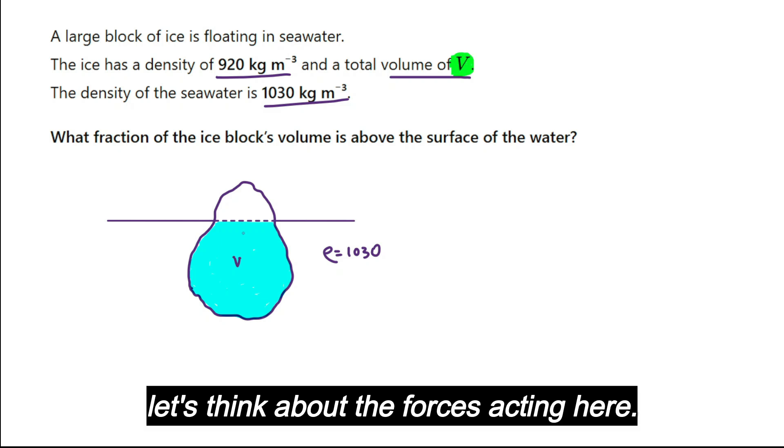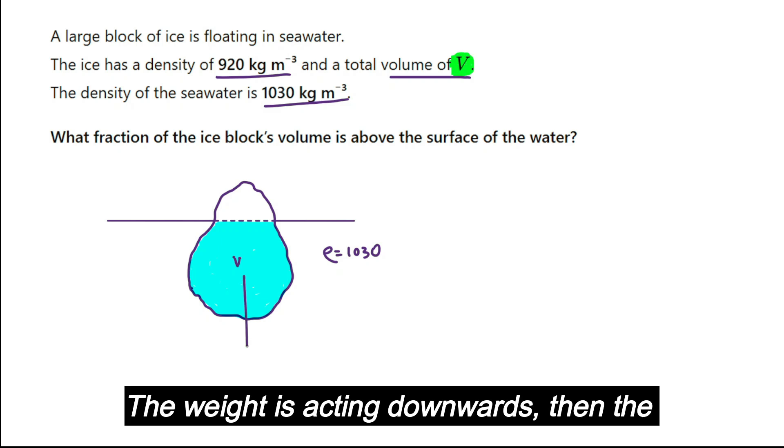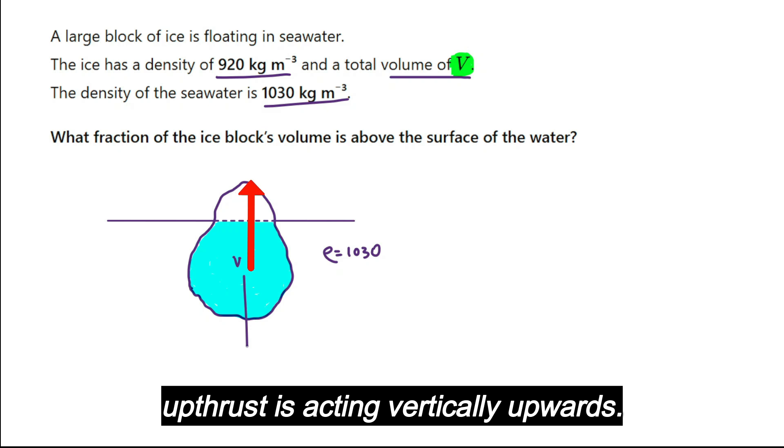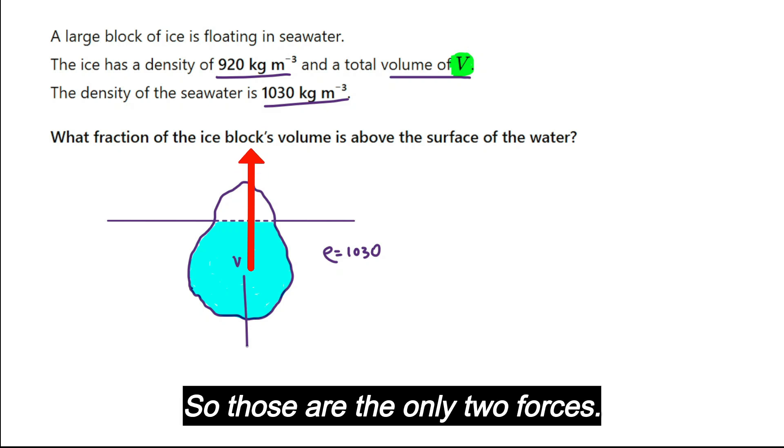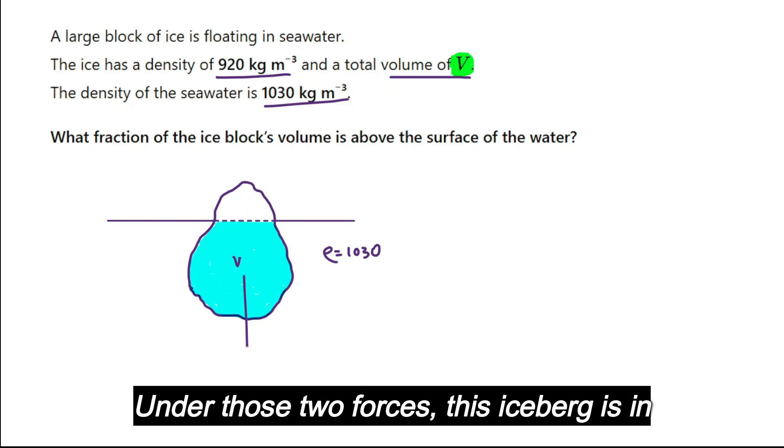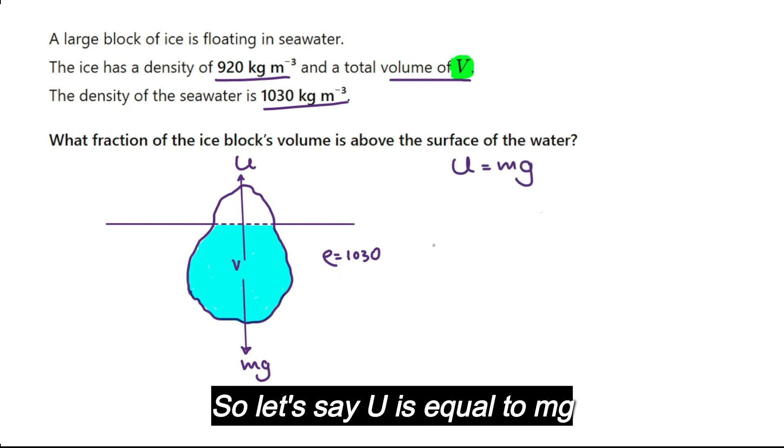Now let's think about the forces acting here. The weight is acting downwards, then the upthrust is acting vertically upwards. So those are the only two forces. Under those two forces, this iceberg is in equilibrium, so U is equal to mg.